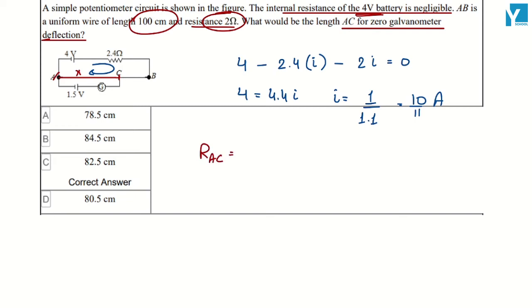This will be x into 2 by 100, that is equal to x by 50 ohms. This is our resistance.